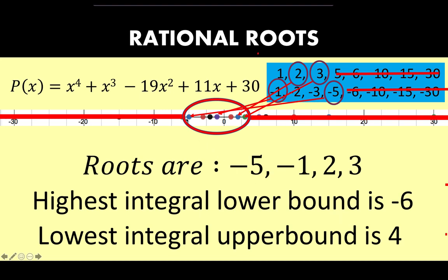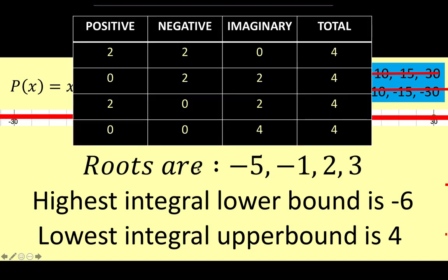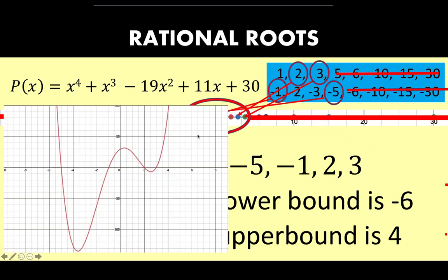The roots of x⁴ + x³ - 19x² + 11x + 30 = 0 are negative 5, negative 1, 2, and 3. The highest integral lower bound is negative 6 and the lowest integral upper bound is 4. Going back to Descartes' rule of signs used at the start, we have two negative real roots and two positive real roots — a total of 4 roots and 0 imaginary roots. If you graph the polynomial function, these four roots are the x-intercepts: negative 5, negative 1, positive 2, and positive 3 are the points of intersection between the curve and the x-axis.